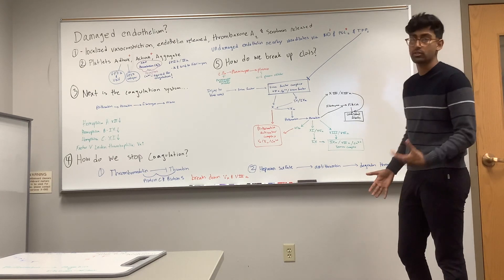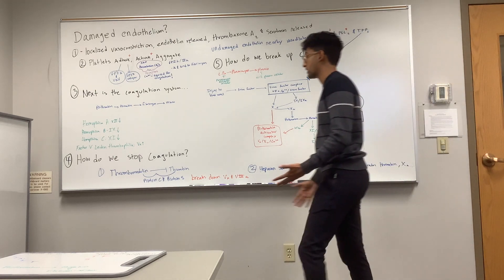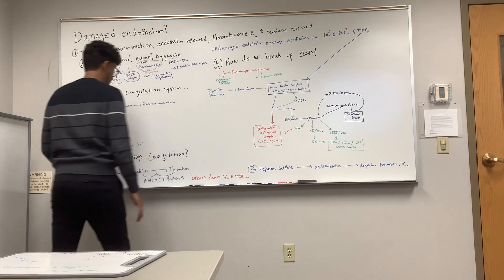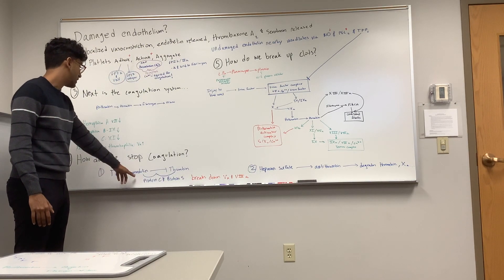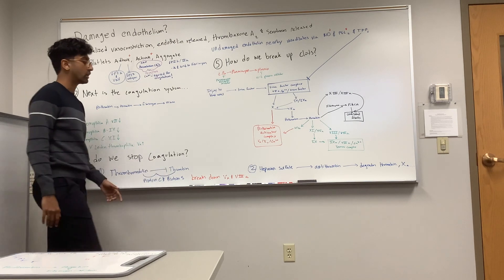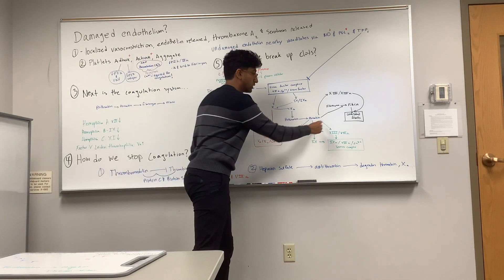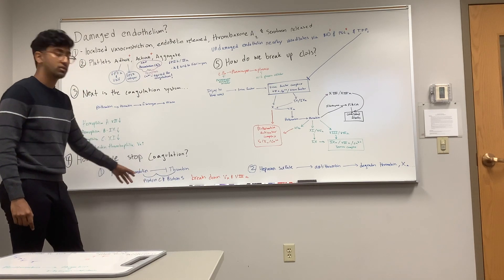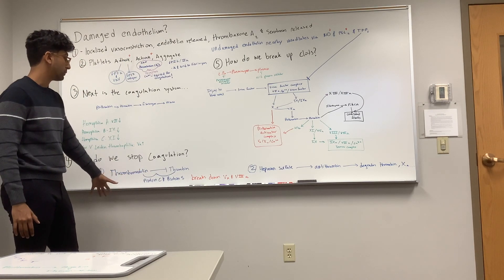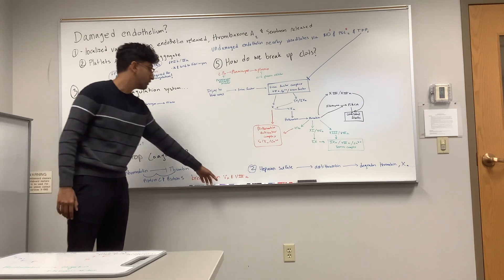Now that we have a clot, how do we stop clotting? Because we want to stop clotting, we don't want to keep clotting, otherwise we'll have issues. For thrombomodulin, it's going to inhibit thrombin, and thrombin, as you can see, is at the center of this whole thing. Once that happens, protein C and protein S is going to form a complex and break down factor 5 and 8.